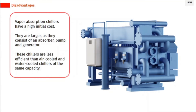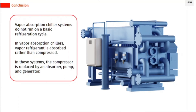Vapor absorption chillers have a high initial cost. They are large, as they consist of an absorber, pump, and generator. The efficiency of these chillers is less compared to air-cooled and water-cooled chillers of the same capacity.